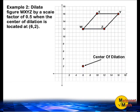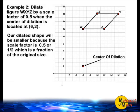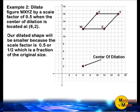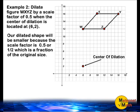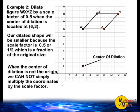Now let's practice dilating an object when the center of dilation is not the origin. In this example, we must dilate figure WXYZ by a scale factor of 1 half when the center of dilation is located at positive 6 and positive 2. Our dilated shape will become smaller because the scale factor is 1 half, which is a fraction of the original size. When the center of dilation is not the origin, we cannot simply multiply the coordinates by the scale factor.